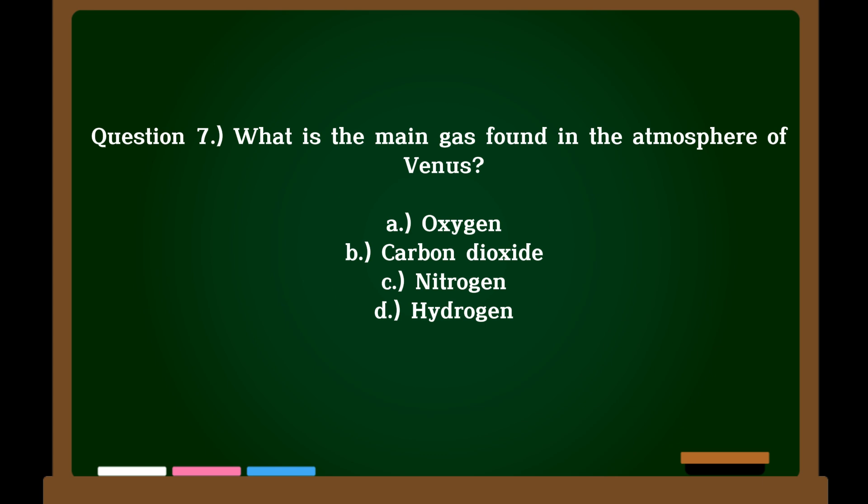Question 7. What is the main gas found in the atmosphere of Venus? A. Oxygen, B. Carbon dioxide, C. Nitrogen, D. Hydrogen. Correct answer: B. Carbon dioxide.